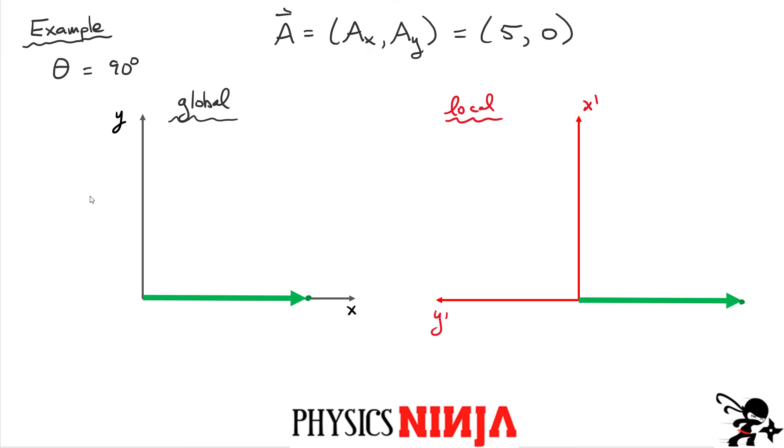All right, one thing I always do after getting a result is check it using some very simple cases. So here we have our global coordinate system. And I'm going to take a very simple vector that simply lies along the X axis here. It has a magnitude of 5. All right, what if I rotated now a coordinate system by an angle equal to 90 degrees? So again, the rotation here would be counterclockwise, and this angle would be 90 degrees. What if I wanted to describe the same vector now in terms of the local coordinate system?